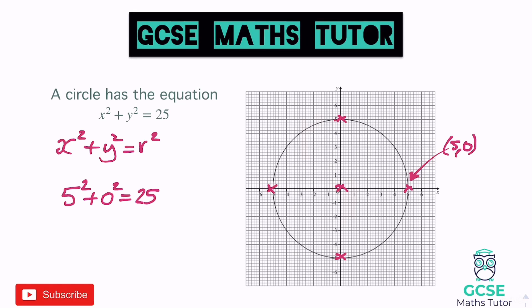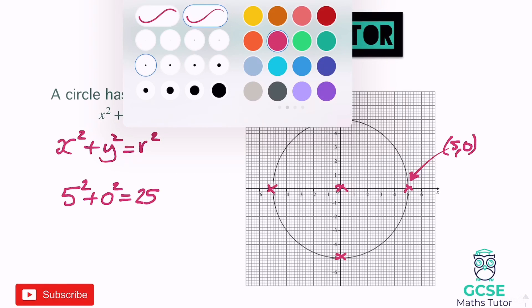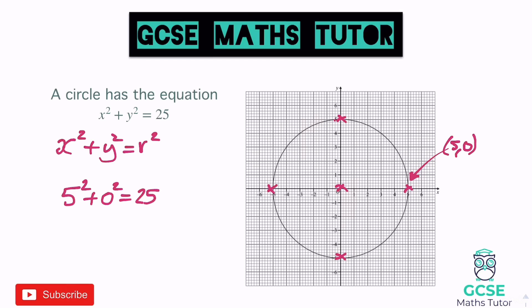It gives us the answer 25, and likewise for all those other highlighted points. But there's another coordinate just here — the coordinate is 4, 3. If we sub those in: 4 squared plus 3 squared. 4 squared is 16, 3 squared is 9, and 16 add 9 is 25. And that works for all the other 4, 3 variants too: (4, -3), (-4, -3), and (-4, 3). It doesn't matter if we sub the negative number in, because negative 4 squared is still 16, and negative 3 squared is still positive 9.